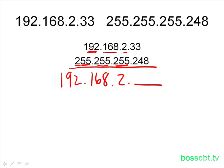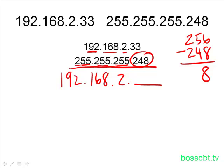There's a formula for this. We write down 256 and subtract from it whatever the subnet value is for that funny octet — here it's 248. That gives us 8. This is called our multiplier, or our funny multiplier, because it comes from the funny-looking octet. We need to determine how many multiples of this number we need to get just greater than 33, but as close to it as possible.